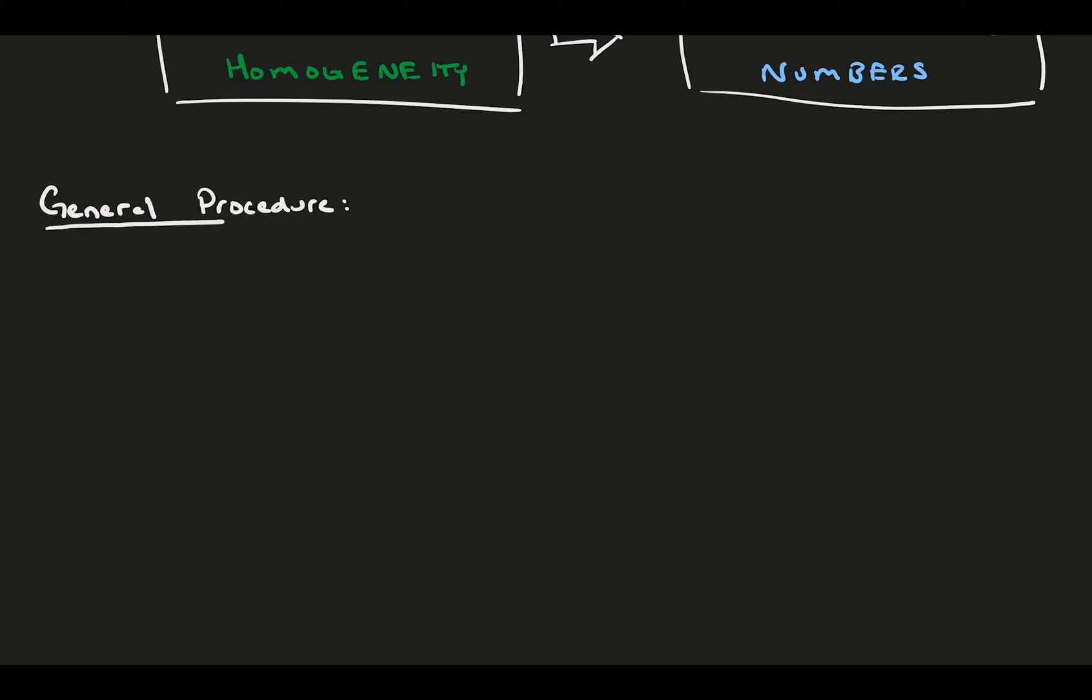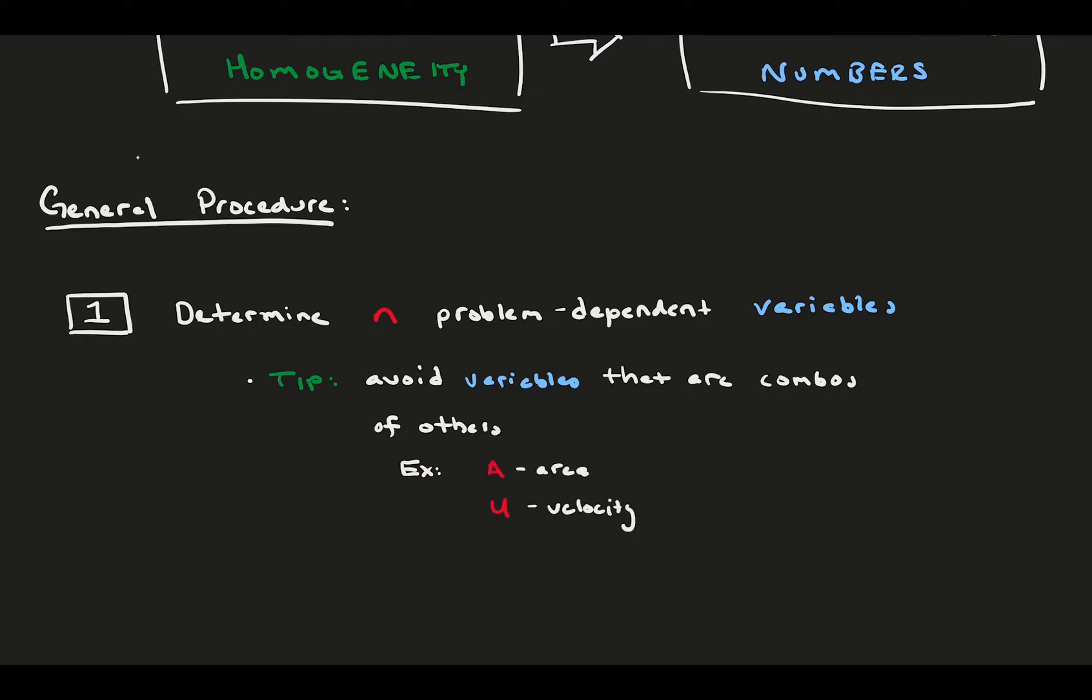Here's the general procedure. Step one, you need to gather all of the meaningful parameters of your problem. This first step can be the most difficult. It's hard to tell what matters and what doesn't. With practice, it gets easier, but it does take a little bit of background knowledge in the problem you're working with. The number of variables you choose is n. As a tip, you want to avoid variables that are either defined by or are combinations of other variables that you've chosen. For example, if you already have area a and velocity u, then defining the volumetric flow rate is redundant, because it is defined by the other two variables you already have, q equals ua.